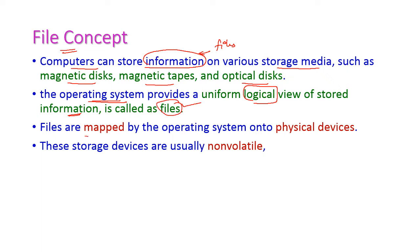The files are then mapped by the OS into physical devices. The physical devices we are having are all the secondary storage devices which contain files, and the storage devices are usually non-volatile storage devices.